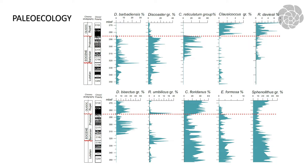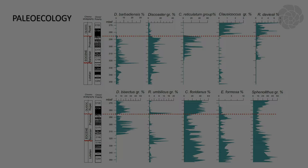For paleoecological reconstruction, we converted the database of nanofossil abundances — previously plotted as numbers per fixed area per square millimeter — into percentages. We could then use the percentage abundance of specific species, groups, or genera for paleoecological and paleoceanographic reconstruction.